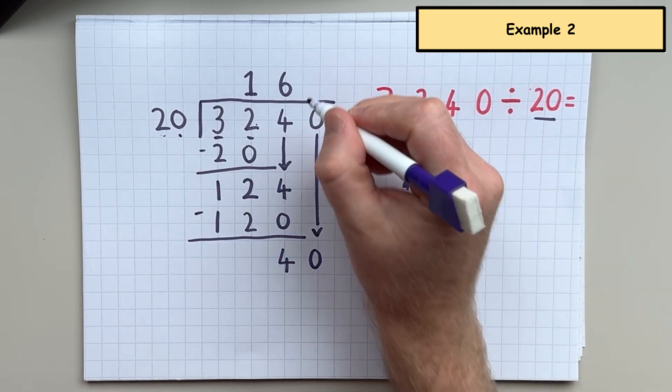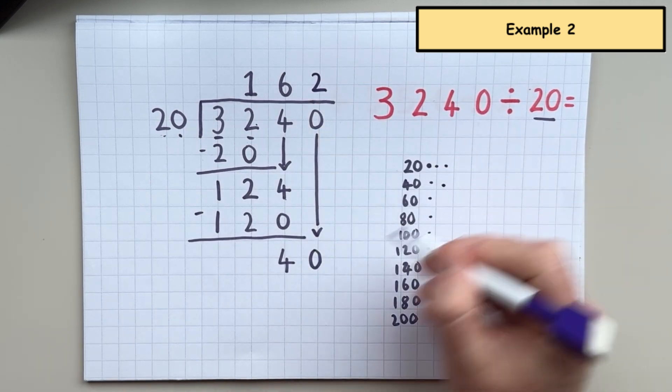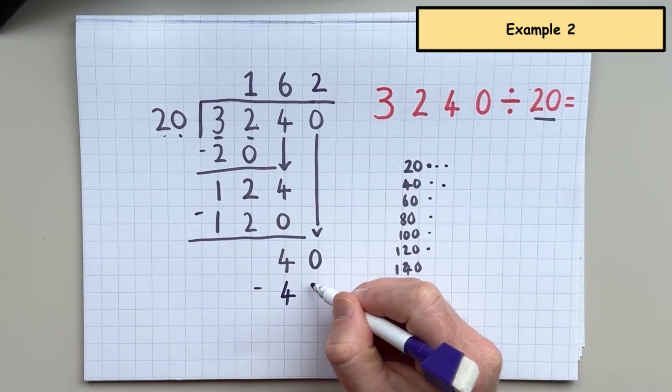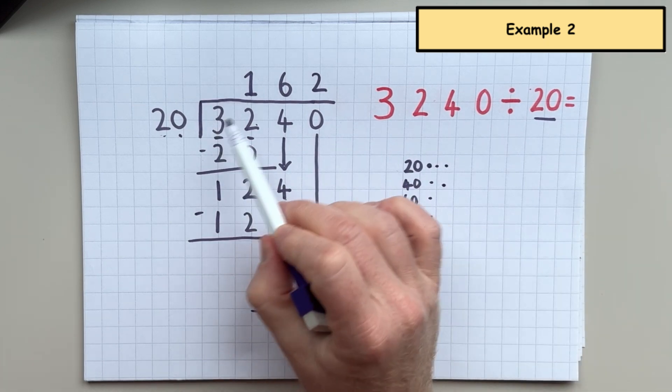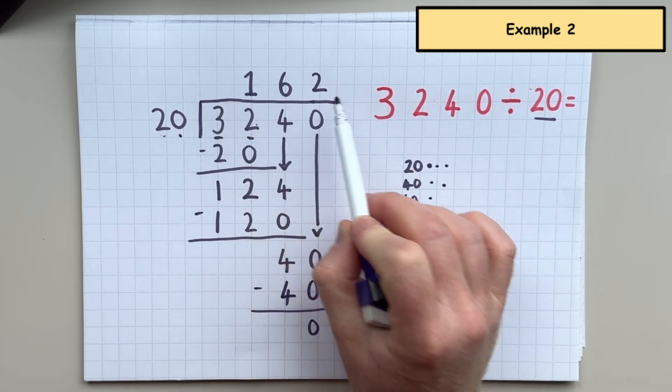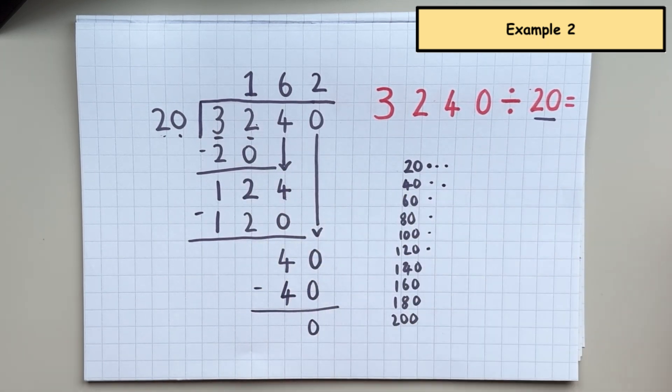How many 20s in 40? There is one, two. And I need to take away that 40. And now I have zero remainders. So the answer is 162. And there is no remainder.